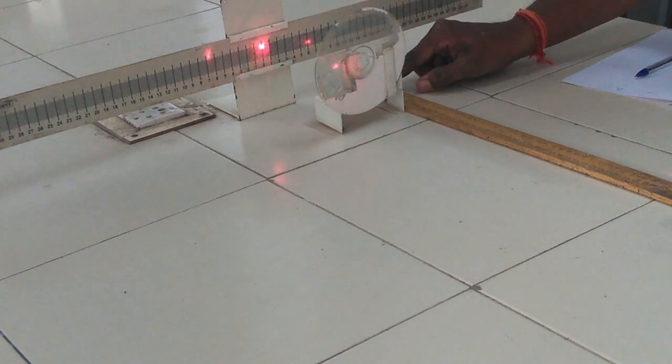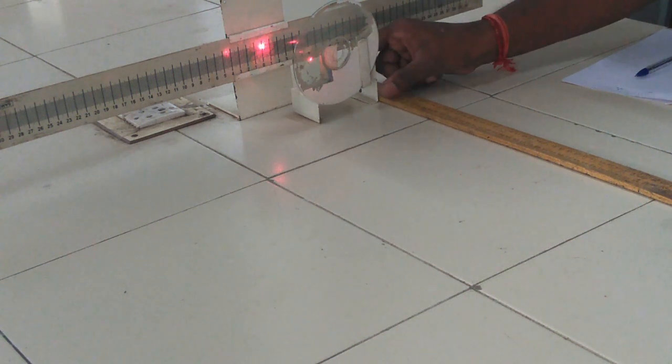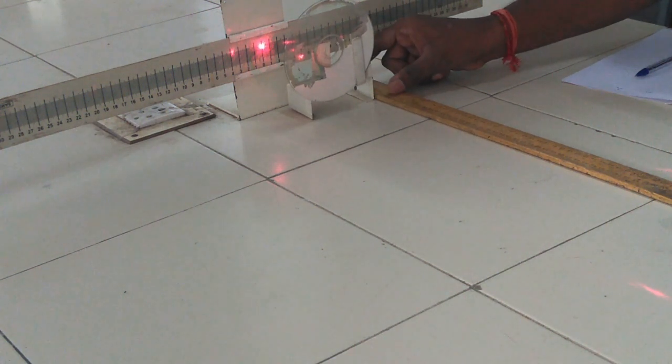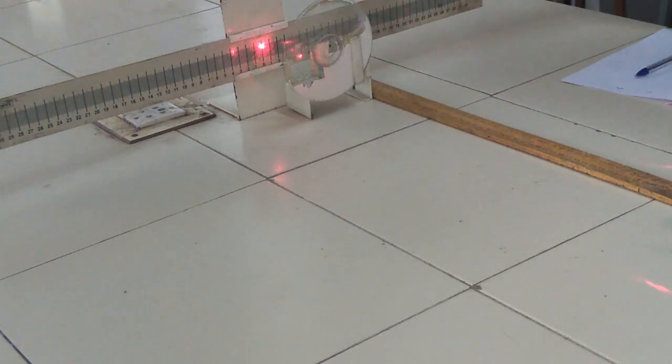For example, the distance is 5 cm between screen and CD. Then you measure the distance between the central maxima and the first order spectrum on both left and right side of the central maxima.